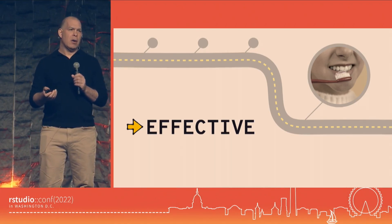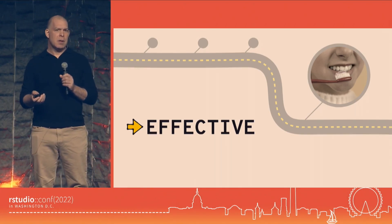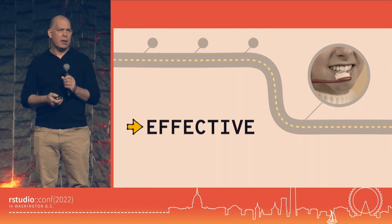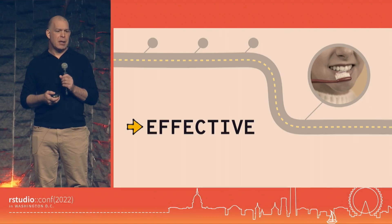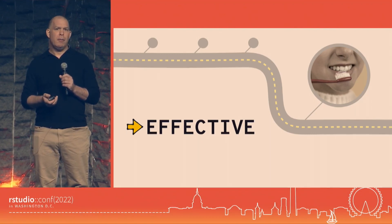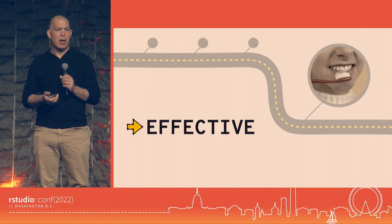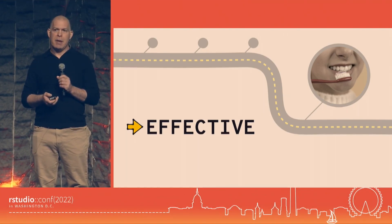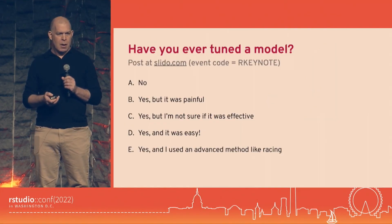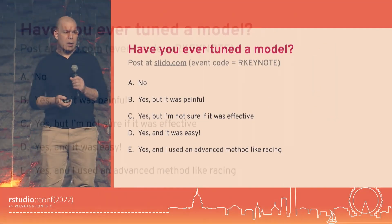We'll talk about some advanced tools we can give you to help — some are about performance, some about efficiency. A big part of building a machine learning model is model tuning, which we mentioned earlier, where you have hyperparameters that you can't directly estimate from the data and you need to find a way to tune them.